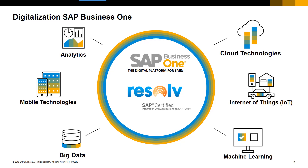If you're already utilizing SAP Business One, you've already made a choice to deploy a digital core — that central component of your infrastructure that enables you to take advantage of all these pillars of digital transformation. Business One today comes with deep, rich analytics capabilities, the ability to take advantage of cloud and mobile technologies, big data via the HANA database, machine learning capabilities, and the ability to interact as part of the Internet of Things. And sitting on top of that is the Resolve product from Achieve IT Solutions.